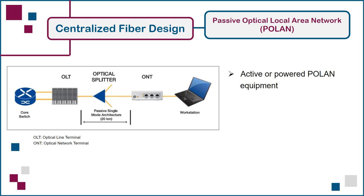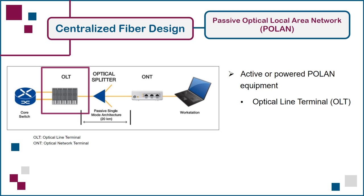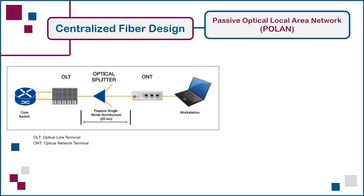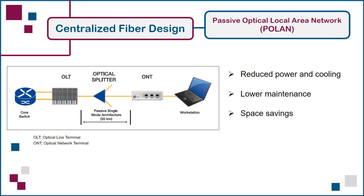The active or powered POLAN equipment consists of an optical line terminal, or OLT, shown here on the left, communicating with many optical network terminals, or ONTs, distributed throughout the building or campus using single-mode fiber. Since most work area devices require copper or RJ45 connectivity, each ONT also functions as a media converter, typically equipped with two or more RJ45 ports, as shown on the right. The advantages of using a POLAN architecture include cost savings through reduced energy consumption and less network maintenance due to the centralized architecture. Other advantages include significant space savings, since network equipment is no longer required on every floor. All switches and servers are centralized in one building or campus distributor room that also houses the OLT.